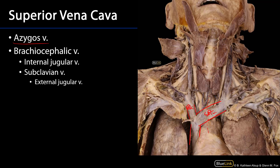Each of these brachiocephalic veins has two major tributaries — I'll just outline them here on the left. The internal jugular vein and the subclavian vein.